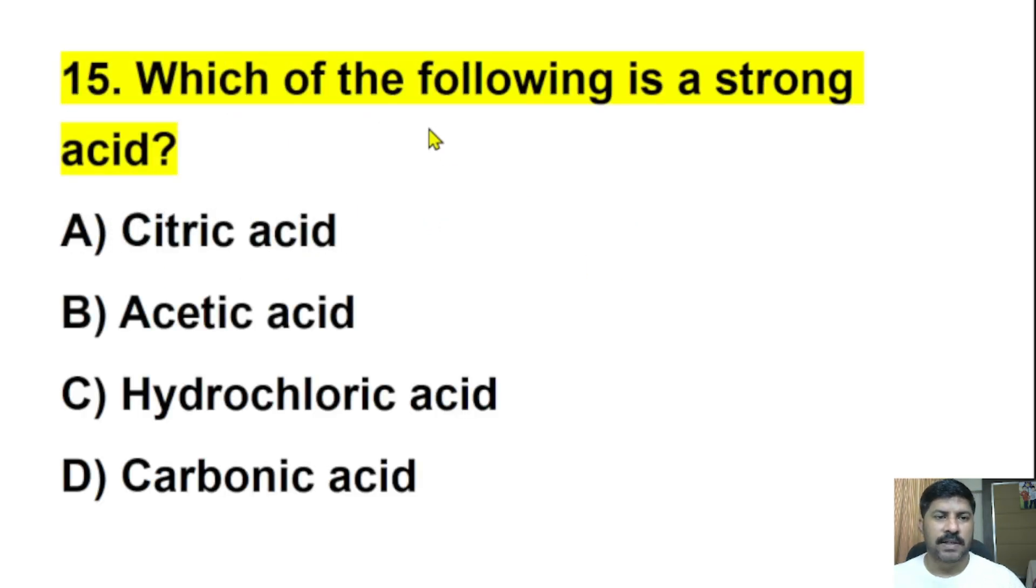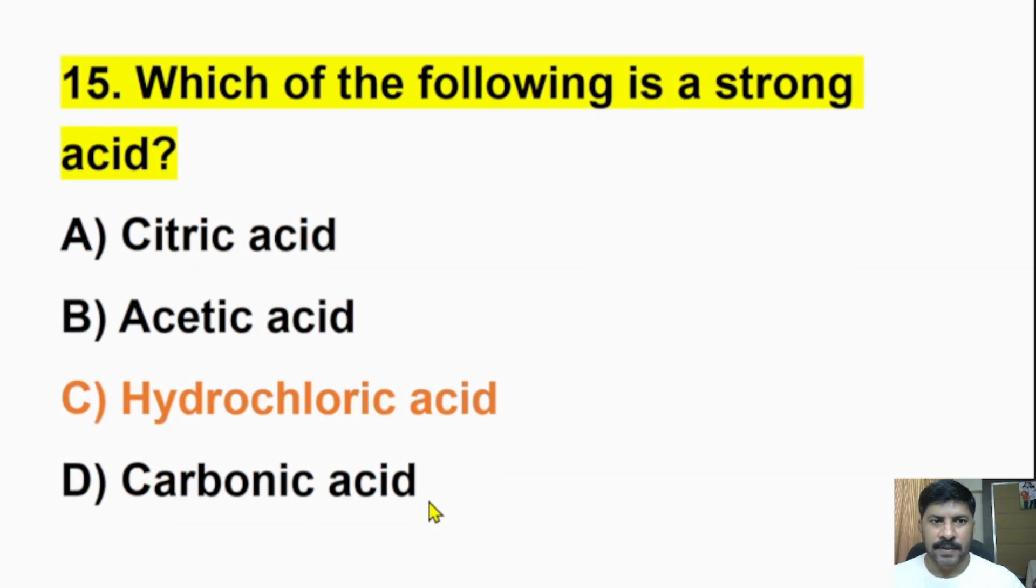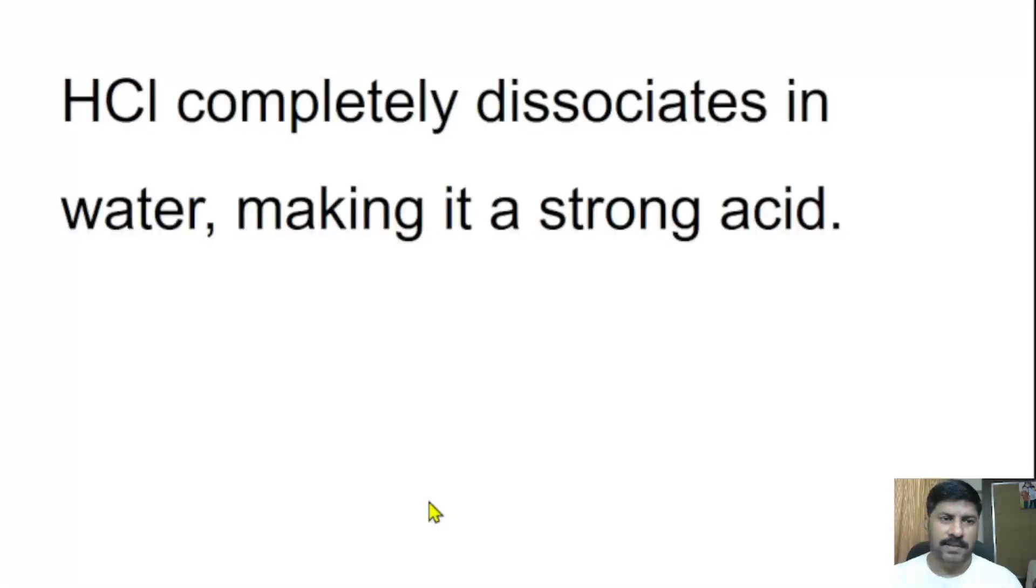Fifteenth question: Which of the following is a strong acid? Citric acid, acetic acid, hydrochloric acid, or carbonic acid? The correct answer is hydrochloric acid. Hydrochloric acid is an example of a strong acid. Hydrochloric acid completely dissociates in water, making it a strong acid. Can you name two more strong acids in the comment section?